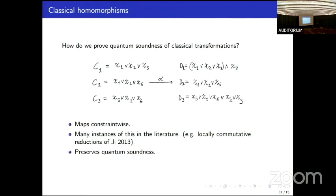How do we prove quantum soundness of classical transformations? We introduce two types of maps between Boolean constraint systems and show that the transformations between games that these two maps give are going to preserve the soundness parameter. The first type is the easier type, called the classical homomorphism. It maps constraints to constraints in such a way that if there is a satisfying assignment here, then there's a satisfying assignment here. There are many instances of this in the literature, for example the locally commutative reductions. These preserve quantum soundness right out of the box.